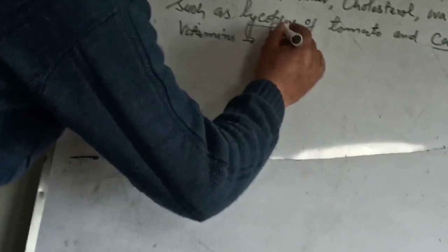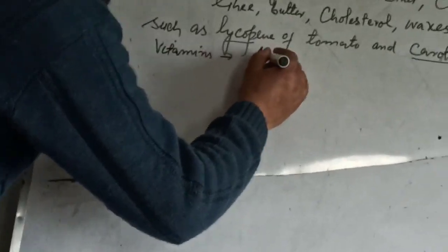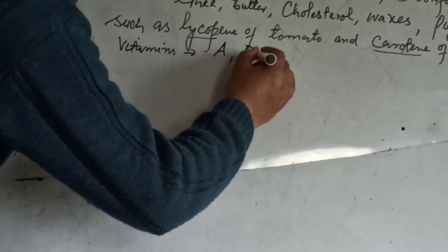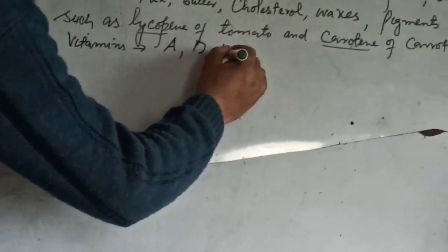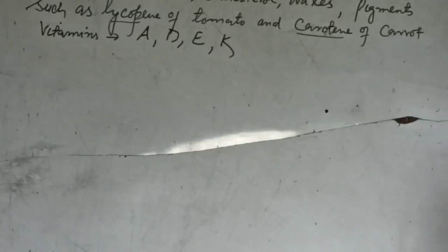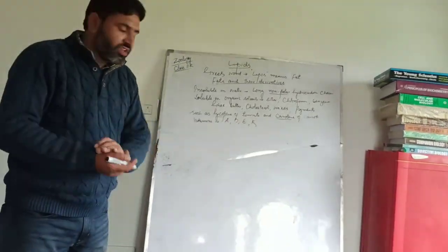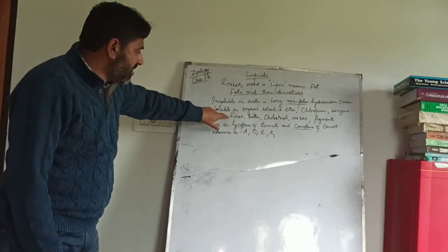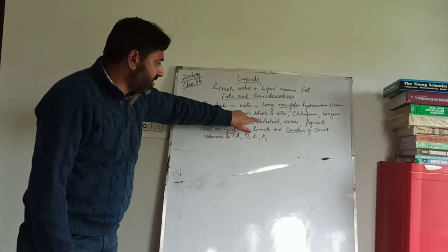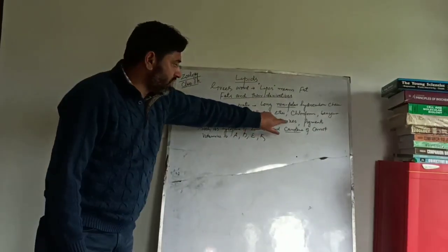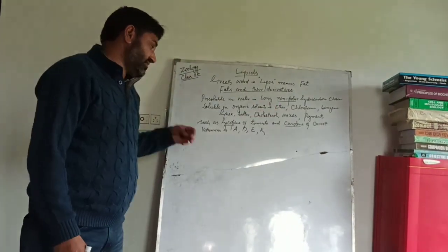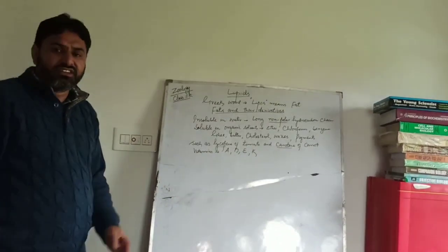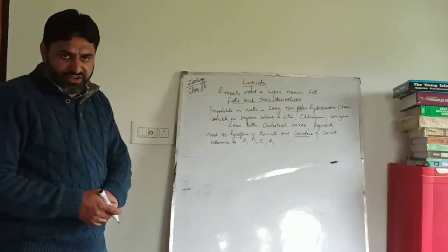Some vitamins are also lipids - that is vitamin A, vitamin D, vitamin E, and vitamin K. They are also known as fat-soluble vitamins. So these lipids are represented by fats like ghee and butter, cholesterol, waxes, certain pigments, as well as some vitamins.